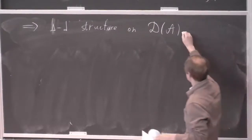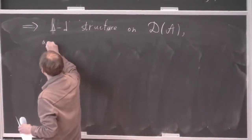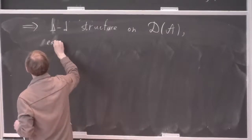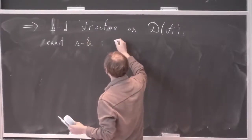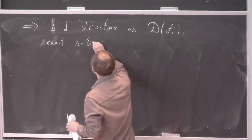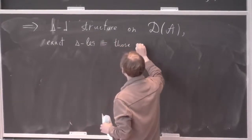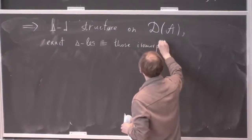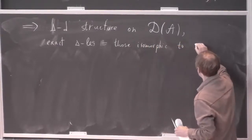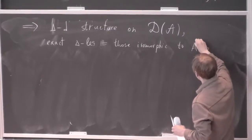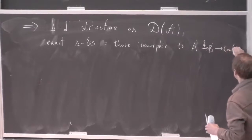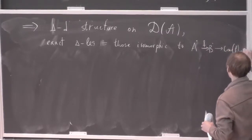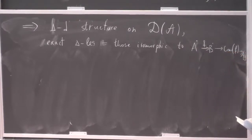By definition, a triangle in the derived category is exact — these are those which are isomorphic to the standard triangles: A → B → cone(f), where there is an actual chain map here.